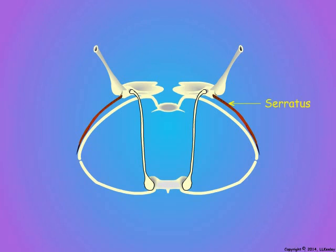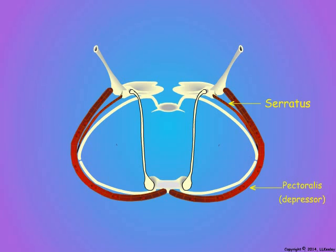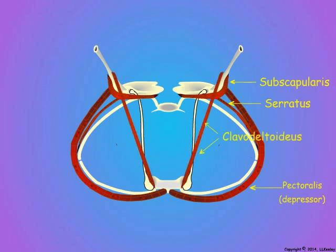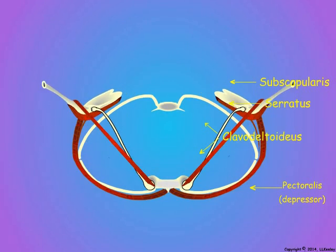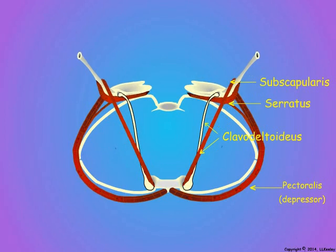The serratus ventralis thoracis pulls the scapula in its lateral ventral movement. In the downstroke, the pectoralis, the subscapularis, and the clavo deltoideus attach to the humerus and pull the wing down. Let us watch several repetitions of the downstroke.